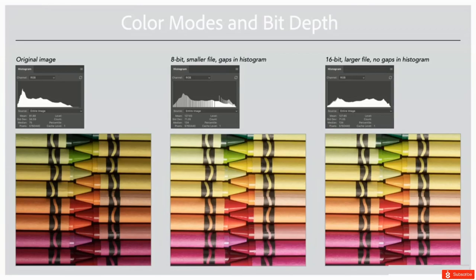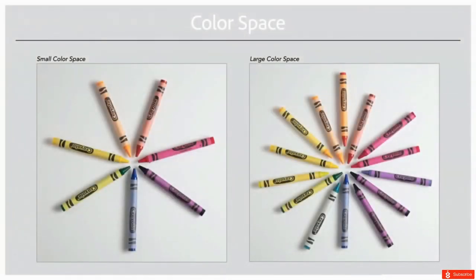If we look at the original image's histogram — something we'll discuss in more depth in later videos — we can see it is nice and smooth. But if I'm working with an 8-bit file and I need to make big changes, for example lightening the image, I'm going to get gaps in the histogram. These gaps represent areas where there are no color values, and if the gaps get too large then the quality of the image will decrease and we will most likely see banding. On the other hand, if I'm working with a 16-bit image, I have more latitude when making those same edits and we're not going to see those gaps in the histogram.